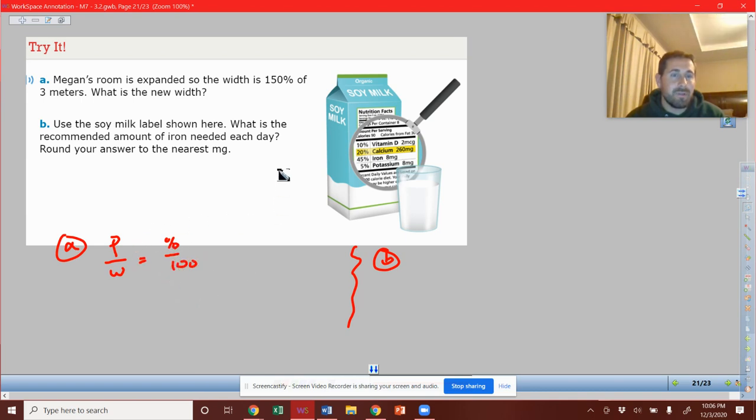So we could think part over the whole equals a percent over 100. So let's plug in the values that we know. We know our percent. The new percent we're looking at is 150. The original was 100. So what is the original? The original was 3. We're trying to figure out what will be the new distance.